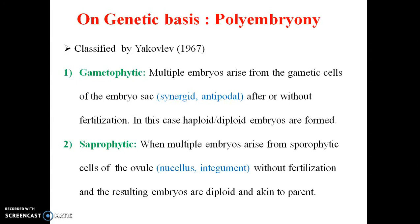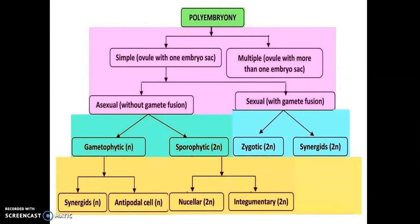Embryo formation can occur after or without fertilization. Gametophytic embryos are non-diploid, arising from separation in sporophytic cells of ovules without fertilization, and are deployed like the parents. This is the overview of the whole embryo types: simple and multiple, where in one embryo segment or more than one embryo segment can be present.